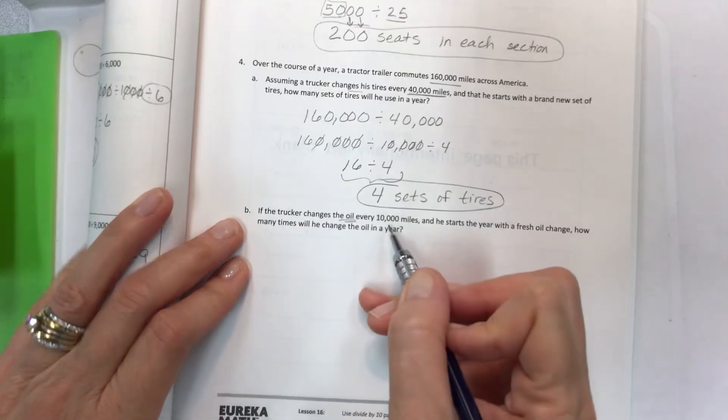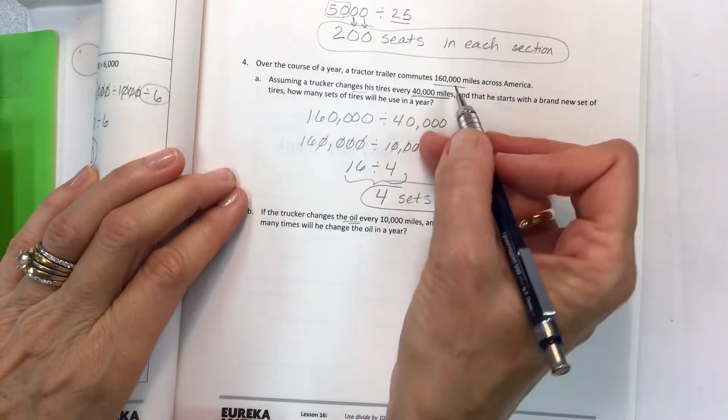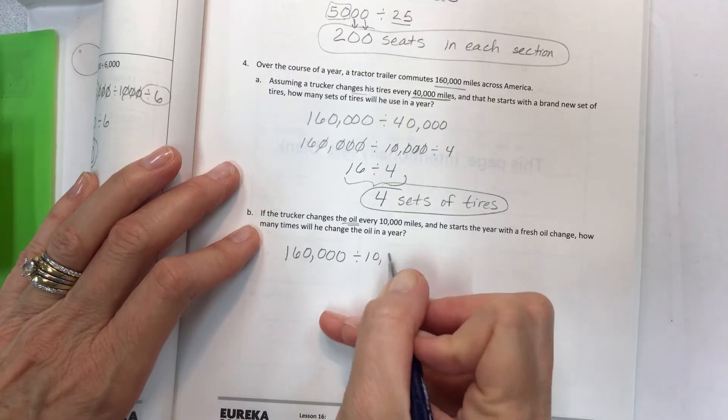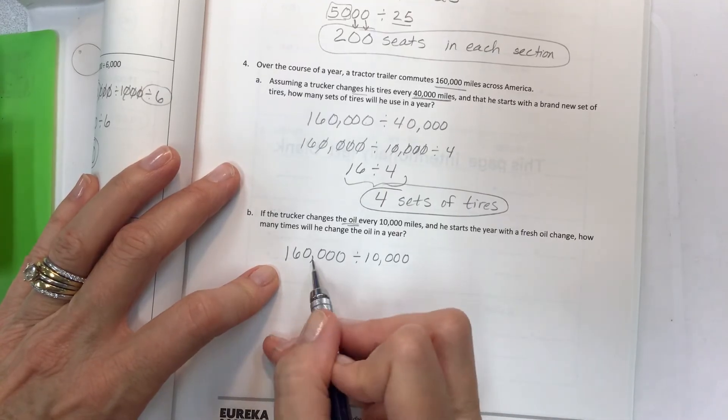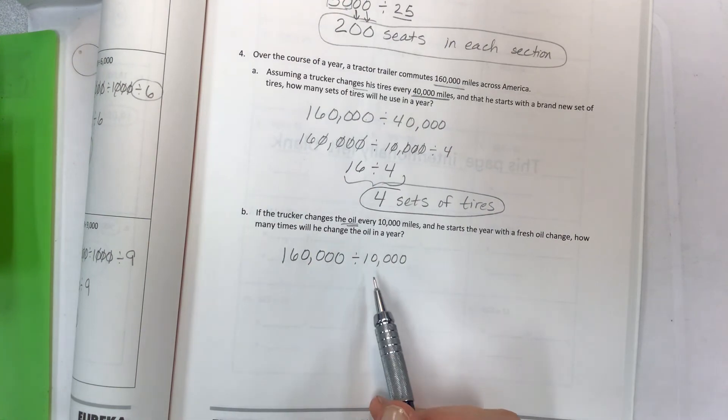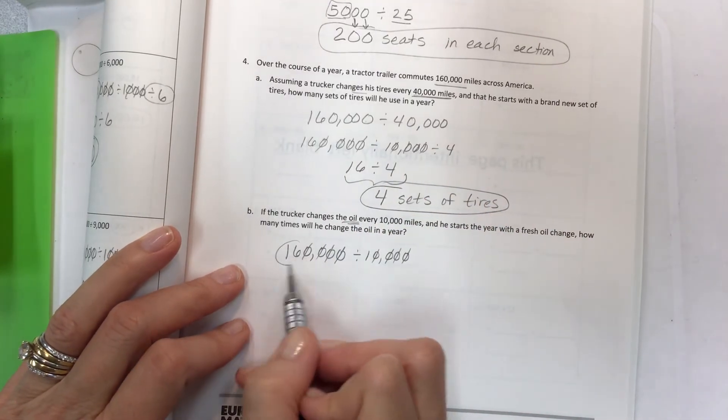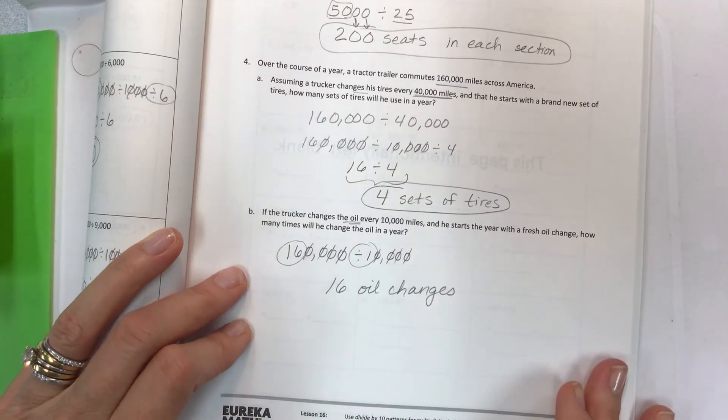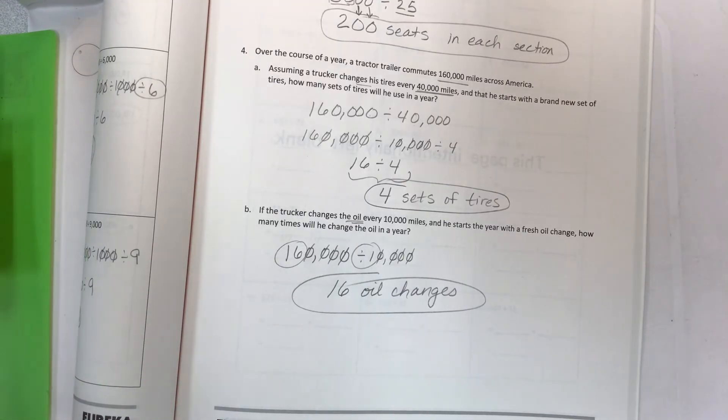If the trucker changes the oil every 10,000 miles and starts the year with a fresh oil change, how many times will he change the oil in a year? You have to start with the 160,000 because that's how far he's going to go. How many zeros can I pull from each side? I've got the four again, so it's already divided by 1. I can just go 1, 2, 3, 4, 1, 2, 3, 4. And what are we left with? 16 divided by 1. 16 what? Changes. 16 oil changes. I hope this is helpful and I hope you guys get it. Long division is really fun, so we'll be getting into it real soon. Come back again. See you on the next video. Bye for now.